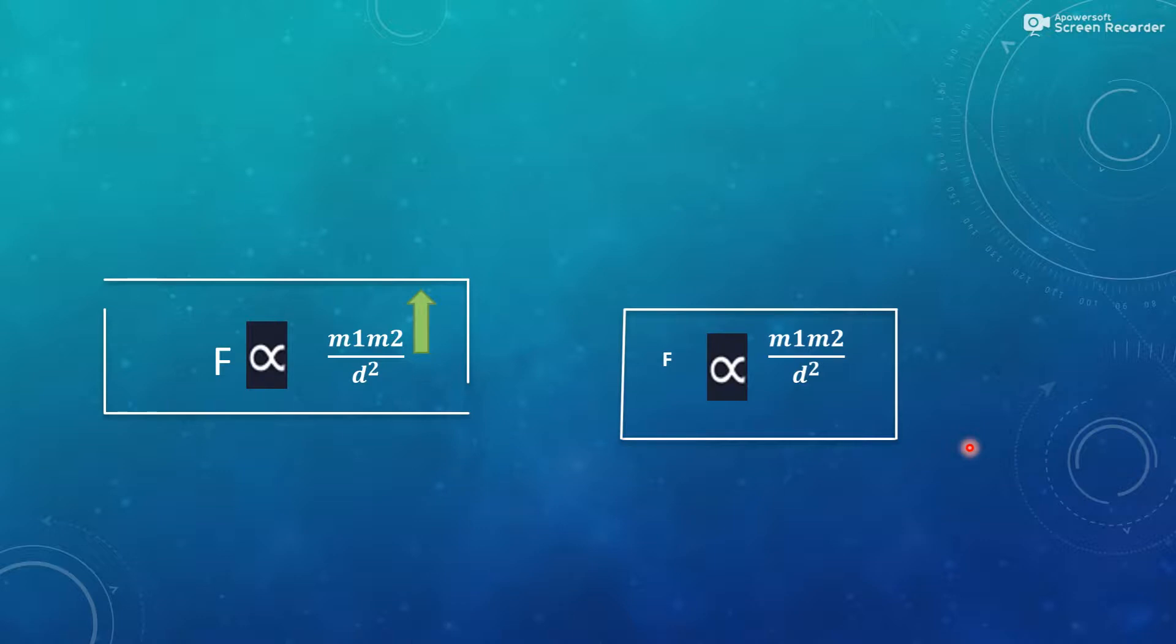If the mass increases, the gravitational force also increases. And if the distance between the object is more, then there will be lesser gravitational force. It means F is directly proportional to M1 and M2 upon D square.